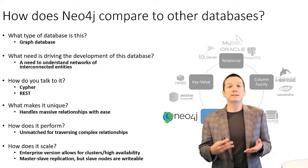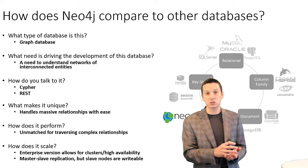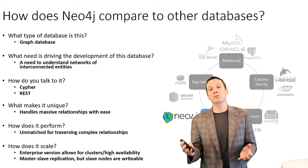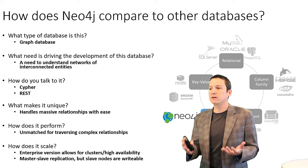What makes Neo4j unique? It's this ability to deal with massive, complex, and sometimes unbounded relationships. While relational databases are pretty good at dealing with simple relationships, when we get relationships that are three or four or even an unknown number of levels deep, our performance will quickly degrade. Whereas Neo4j and other graph databases are able to handle this type of complex relationship with no problem — it's just what they are designed to do.